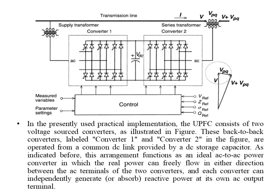In presently used practical implementations, the UPFC consists of two voltage source converters — Converter 1 and Converter 2 — as illustrated in the figure. These back-to-back converters are operated from a common DC link provided by a DC storage capacitor. This arrangement functions as an ideal AC-to-AC converter in which real power can freely flow in either direction between the AC terminals of the two converters.